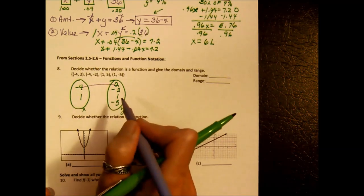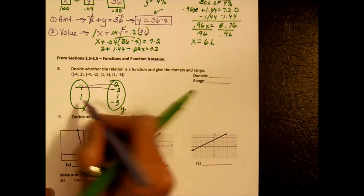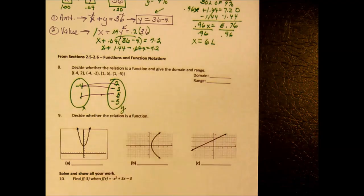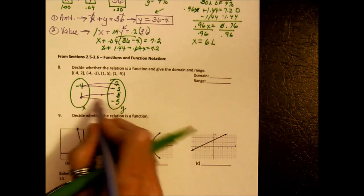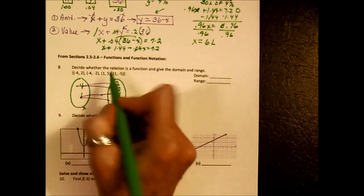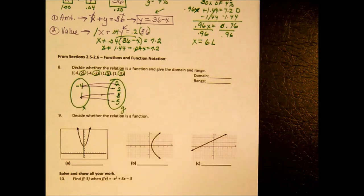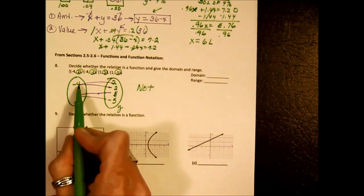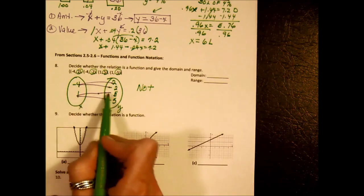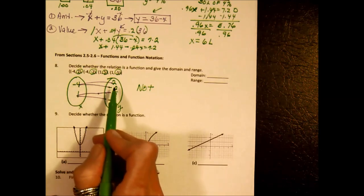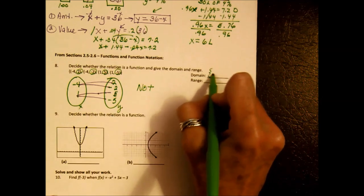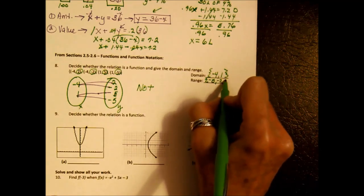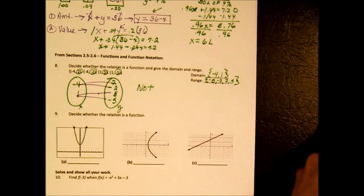Mapping: negative 4 goes to 2, but negative 4 also goes to negative 2. And 1 goes to 5 and also to negative 5. I immediately know this is not a function, because negative 4 goes to more than one y-value. The domain is {negative 4, 1} and the range, in numeric order, is {negative 5, negative 2, 2, 5}.